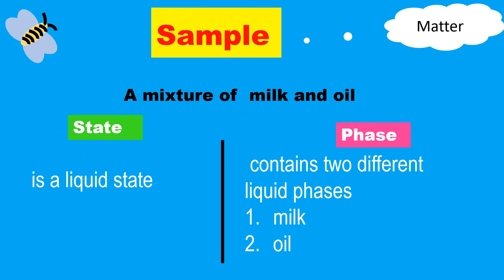Why is this so? This is the example: a mixture of milk and oil. When we say state, the state of this mixture is a liquid state. While when we say phase, it contains two different liquid phases. One is milk having uniform physical and chemical properties, and the second liquid phase is the oil having the same or uniform physical and chemical properties.